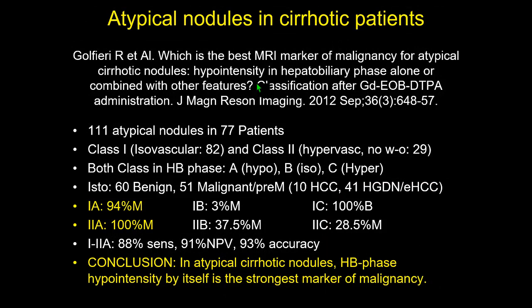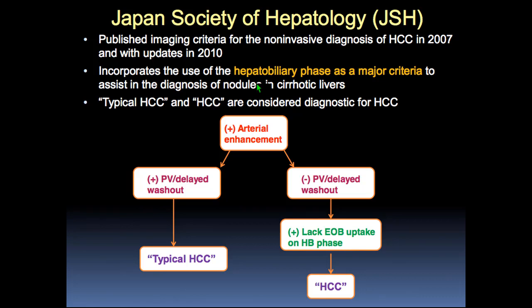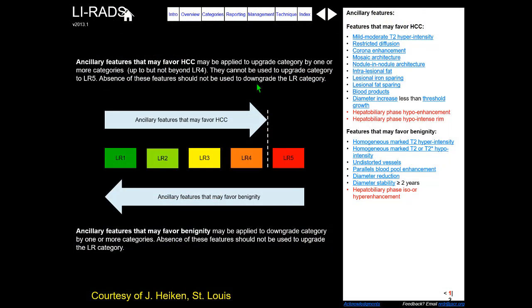In atypical cirrhotic nodules: when nodules are hypointense on hepatobiliary phase, in most cases they become malignant; when isointense or hyperintense, they usually behave as benign lesions. Hepatobiliary phase hypointensity alone is the strongest marker of malignancy in atypical nodules. This importance is recognized by Japanese society guidelines, where lack of uptake leads to considering a lesion as HCC even without washout — though in LI-RADS classification this is still considered an ancillary feature.